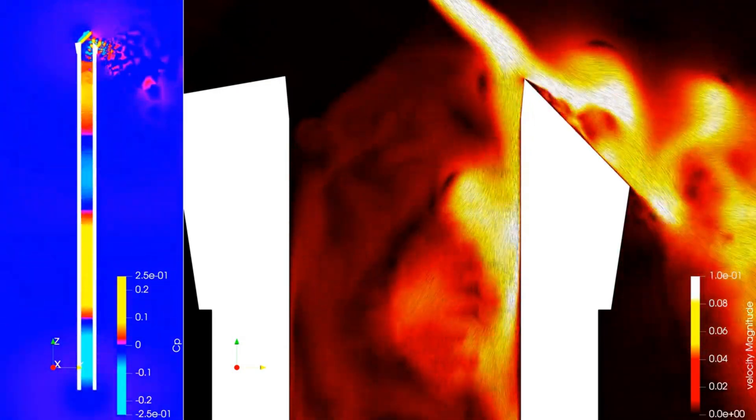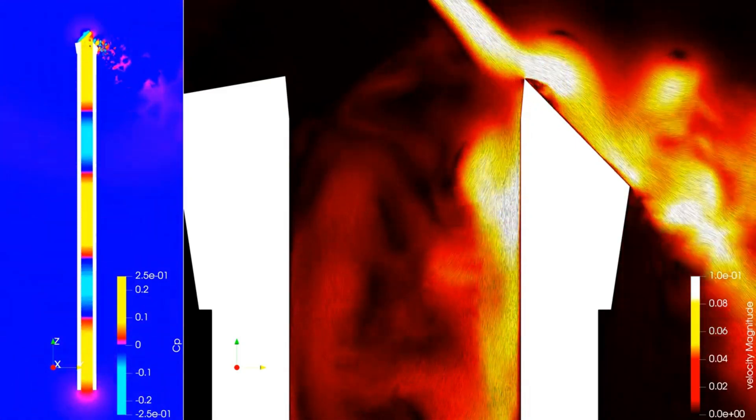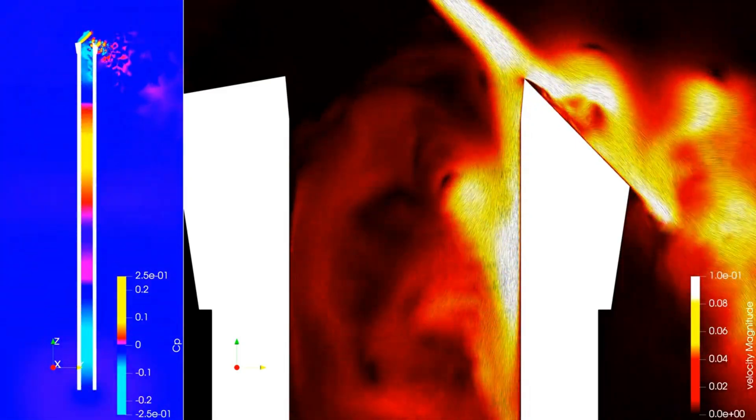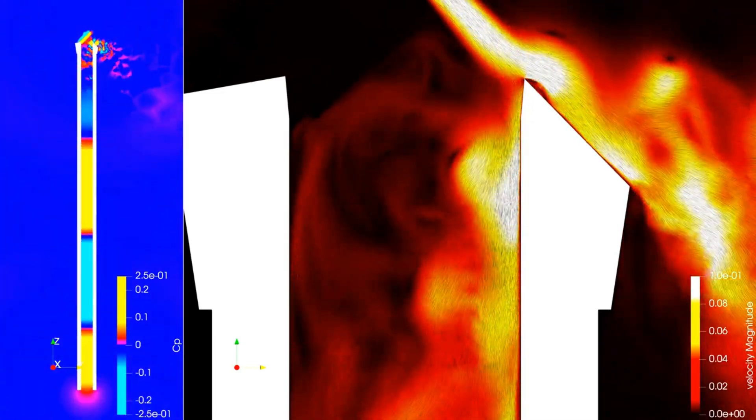So when the pressure inside the flute near the mouth is low, it sucks the jet into the flute. And when the pressure near the mouth inside the flute is high, it pushes the jet out of the flute.